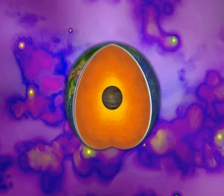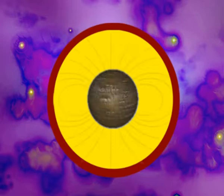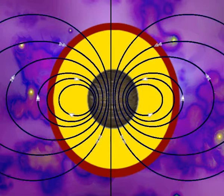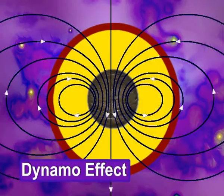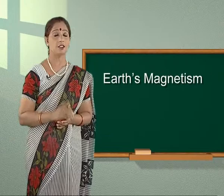that is, ions of iron and nickel in the highly conducting liquid region of the Earth's core, also rotates. This gives rise to electric currents in the fluid. These electric currents are responsible for Earth's magnetism, commonly known as the dynamo effect.